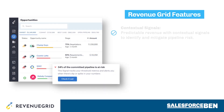Finally, we come on to the signals and forecasting side of Revenue Grid. Revenue Grid enables predictable revenue forecasting with contextual signals, giving sales and ops teams confidence to predict forecasts earlier and more accurately using live data. Managers will have the ability to identify and mitigate pipeline risk with the ability to inspect deals from within the Revenue Grid platform.